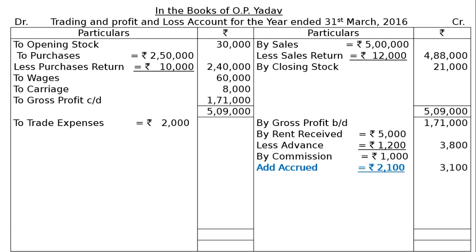Next, come down to the debit side for expenditure. The first one being trade expenses on the debit side of the trial balance. The third adjustment states outstanding liability for trade expenses Rs. 12,000. Add outstanding trade expenses Rs. 12,000, and in the final column it will be Rs. 14,000. This outstanding trade expenses will be shown on the balance sheet's liability side as current liabilities.